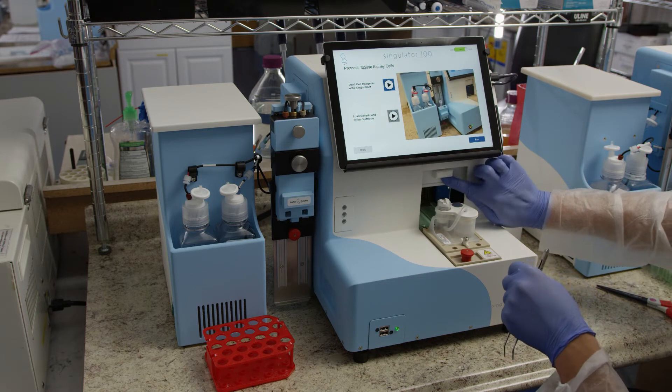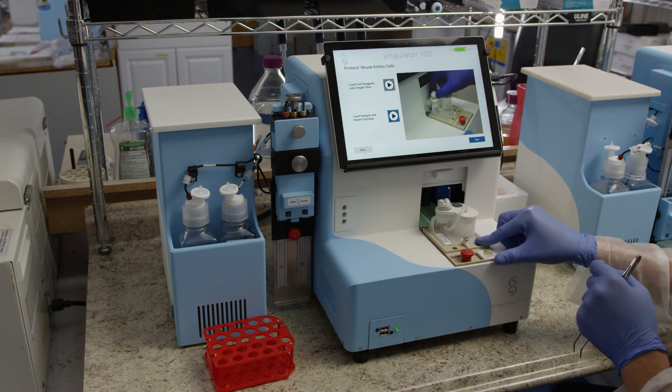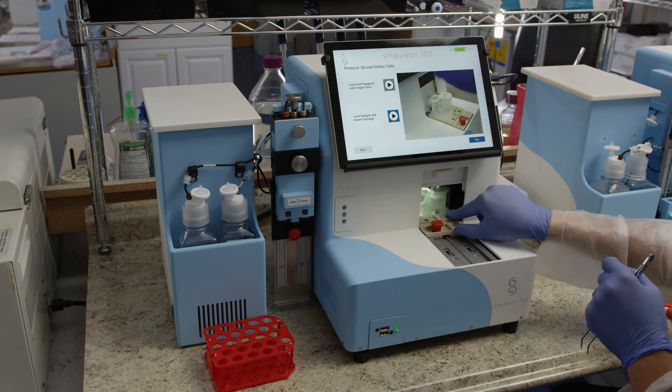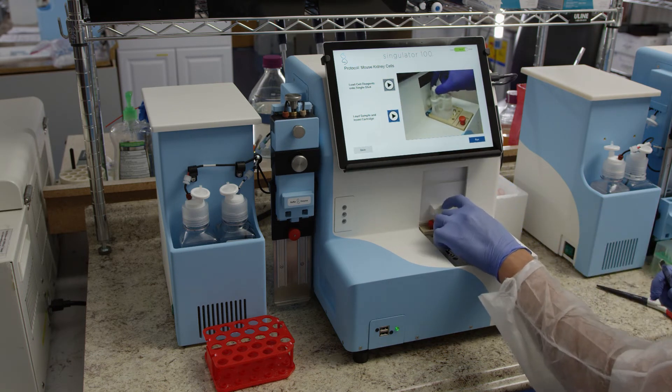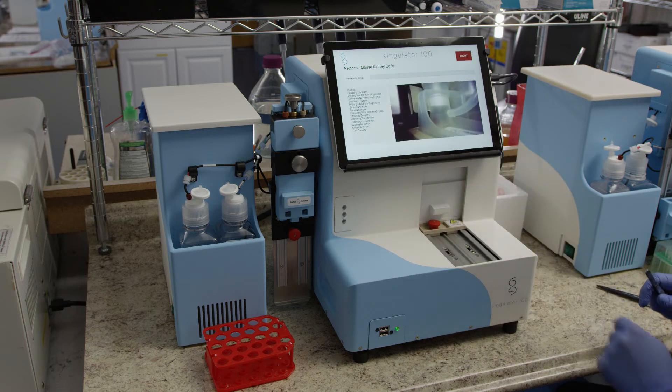Insert the cartridge into the instrument by pushing the stage from behind. It's important not to hold onto the red knob during this step. You should hear the red knob click into place when the cartridge is fully inserted. Close the door and click Next.